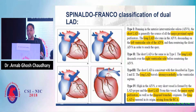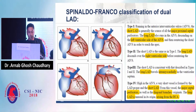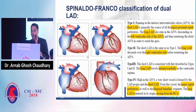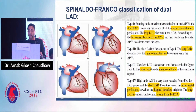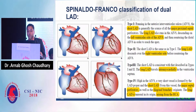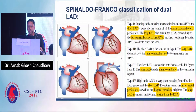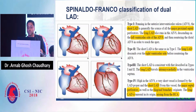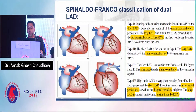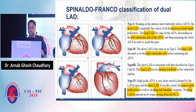This is the Spindola-Franco classification of dual LAD. In type 1, the short LAD gives rise to only major proximal septals, and the long LAD traverses from the left ventricular side of the anterior interventricular septum. In type 2, the long LAD traverses from the right ventricular side. In type 3, the long LAD has an intramyocardial course. Type 4 is very rare and different: here the short LAD gives both major septal perforators and diagonal branches, and the long LAD comes from the RCA, as in our case.